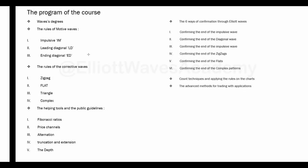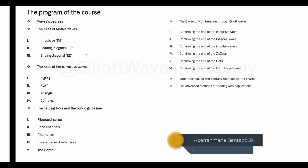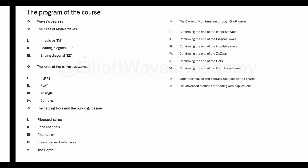Hello guys. In today's video we're going to speak about the corrective waves — the first kind of the corrective waves, which is the zigzag. We have four patterns in the corrective waves: three of them are simple and one of them is complex. The simple corrective waves are the zigzag, the flat, and the triangle. Each pattern can be in different forms. Today we're going to see the shapes or the forms of the zigzag pattern.